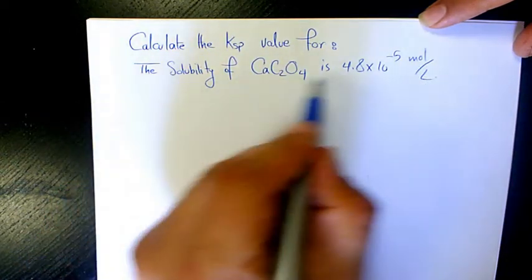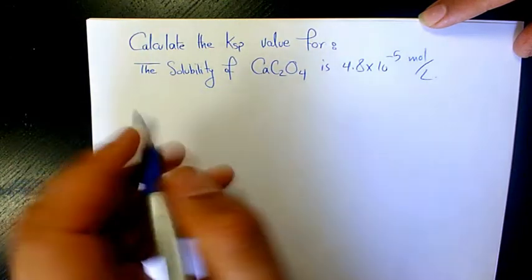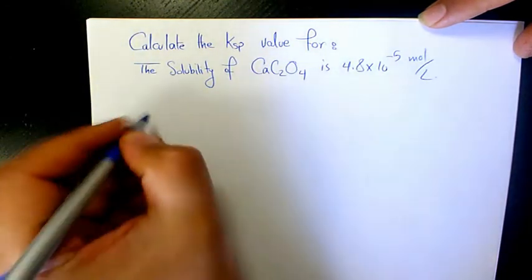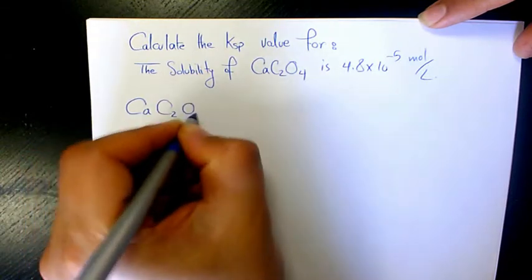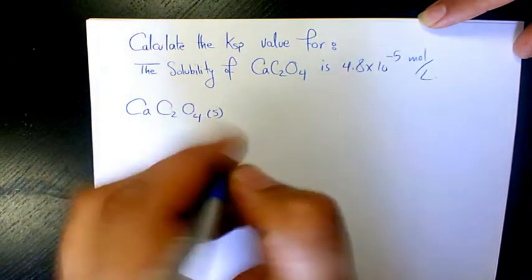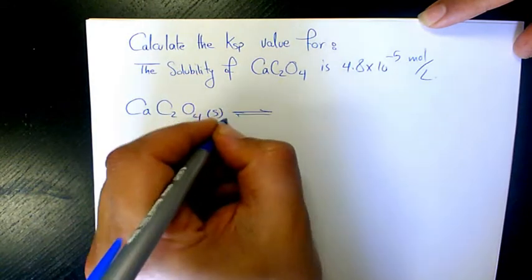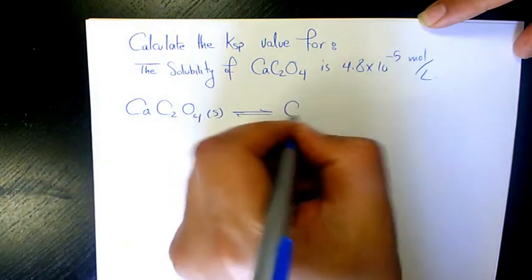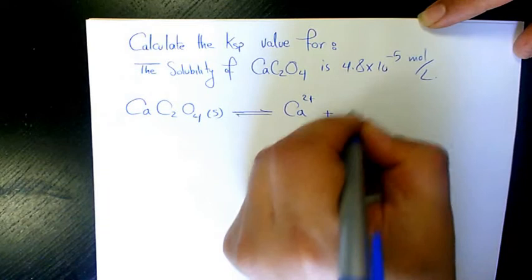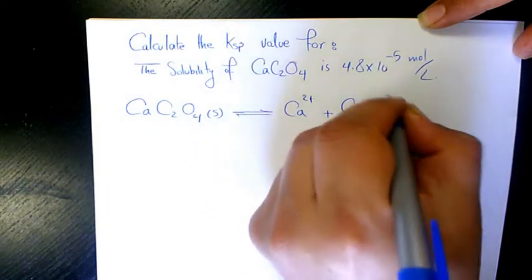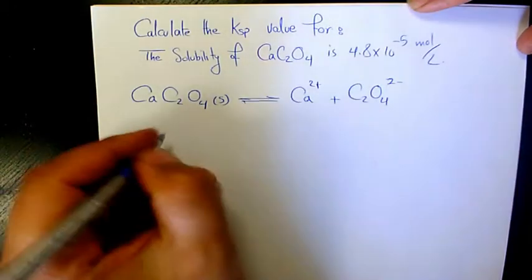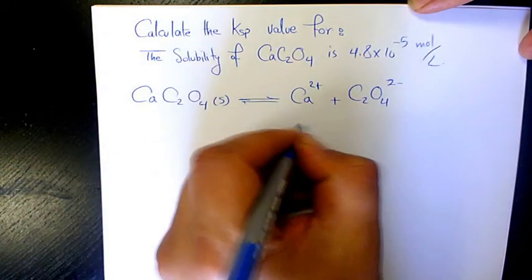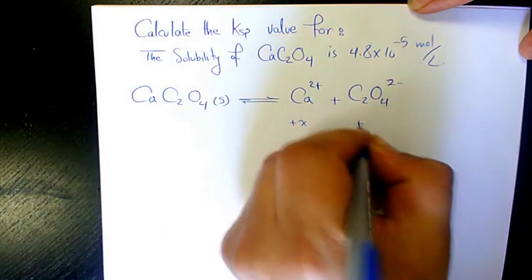Solubility is given, we need to find out the Ksp of this solid. We have CaC2O4 in solid form. It dissolves and produces calcium ion plus oxalate ion. We have negative X here, positive X here, and positive X here.